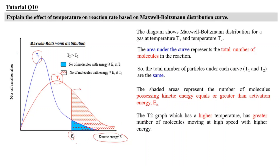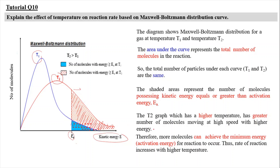The T2 graph, which is at higher temperature, has a greater number of molecules moving at high speed with higher energy. The percentage of the T2 graph above the activation energy Ea is much larger compared to T1, where only a small percentage has energy greater than Ea. Therefore, more molecules can achieve the minimum energy required — the activation energy — and thus the rate of reaction increases with higher temperature.